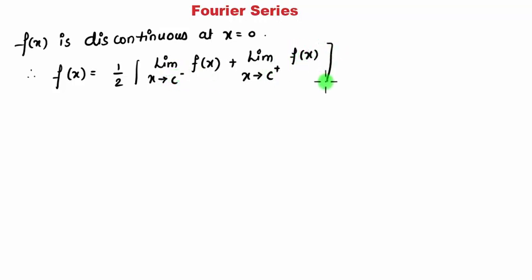of f of x. Since your c point is x equal to c, that comes to be 1 by 2. The starting is minus pi, and when you put